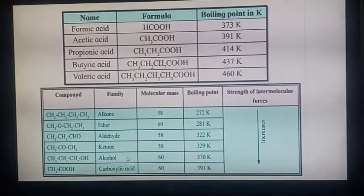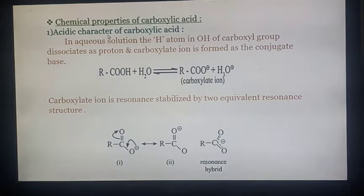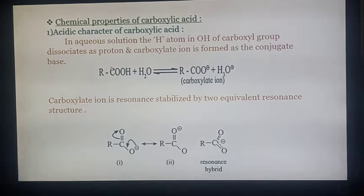Next point is chemical properties of carboxylic acid. First point is acidic character of carboxylic acid. In aqueous solution, the hydrogen atom of the carboxyl group dissociates as a proton, and the carboxylate ion is formed as the conjugate base. When carboxylic acid reacts with water, it undergoes dissociation to form RCOO⁻ (carboxylate ion) plus H⁺.